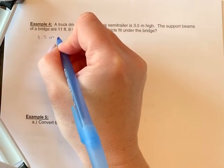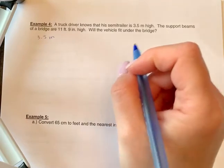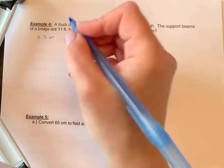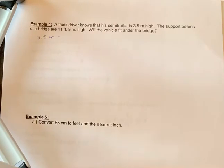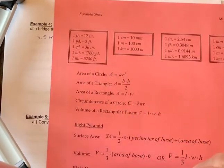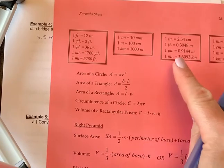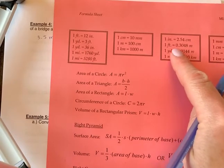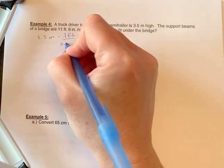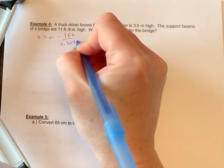So 3.5 meters is how many feet and then we'll figure out how that breaks down for feet and inches. So I'm going to convert meters to feet. So we're going to see if I have a direct relationship between meters and feet. And I do, if I look, I have one foot is 0.3048 meters.